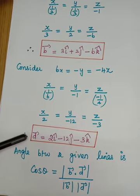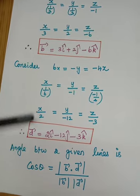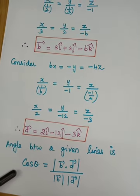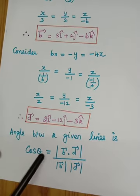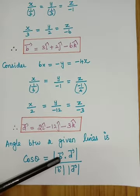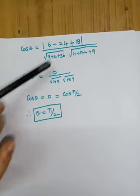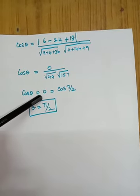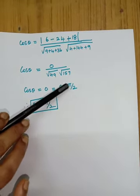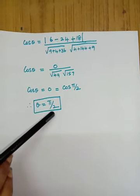Using the angle formula with B = (3, 2, −6) and D = (2, −12, −3), the dot product in the numerator is: 3×2 + 2×(−12) + (−6)×(−3) = 6 − 24 + 18 = 0. So cos θ = 0, which equals cos 90° = cos(π/2). Therefore θ = π/2.